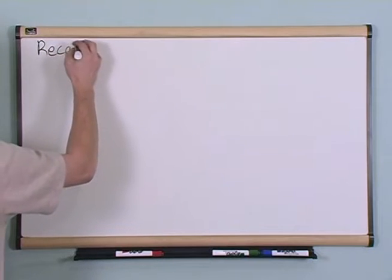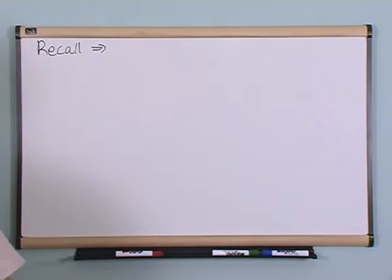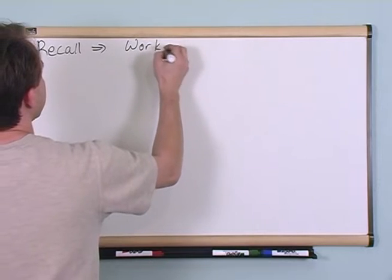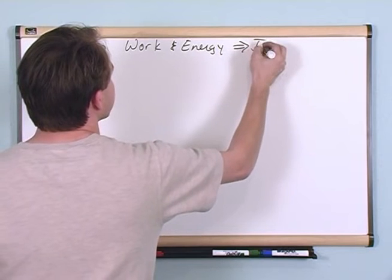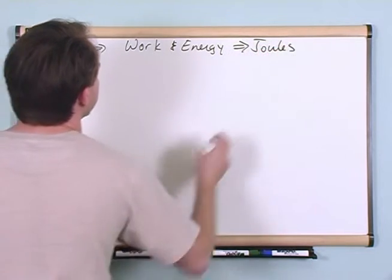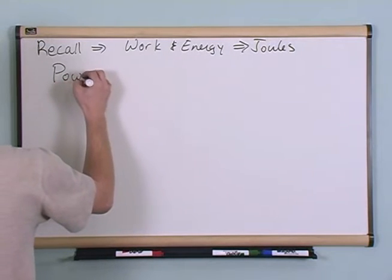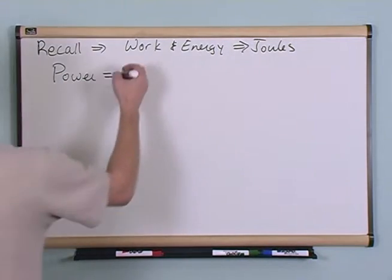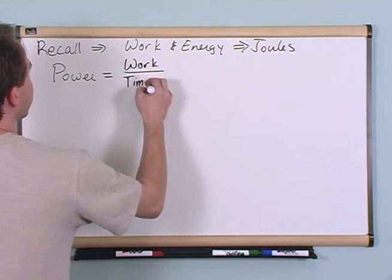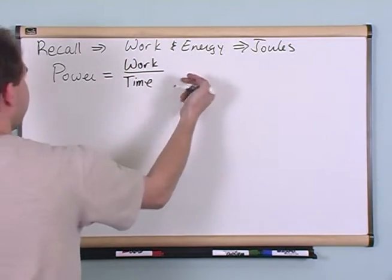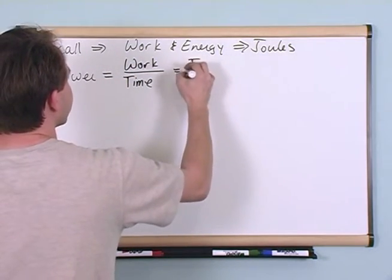Recall that work and energy are in units of joules, and that should be nothing new to you. So the unit of power is work per unit time. This is what I was telling you. It's how many joules per second. So the unit would be joules per second.